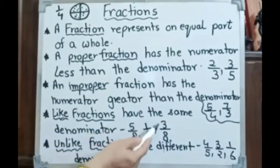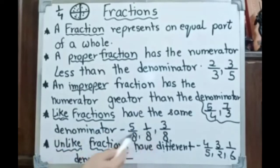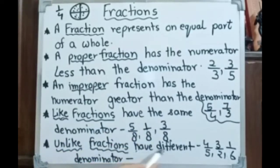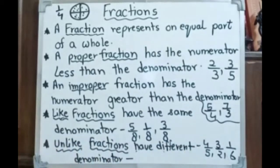Like fractions have the same denominator — for example, 5 by 8, 1 by 8, 3 by 8. All three fractions have the same number 8, so these are like fractions. Unlike fractions have different denominators, like 4 by 5, 3 by 2, 1 by 6 — here we have 5, 2, and 6, different numbers, so these are called unlike fractions.